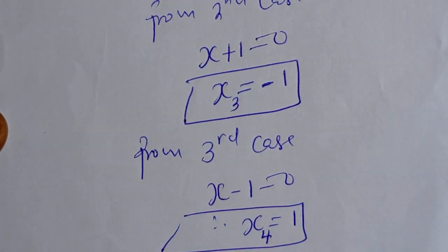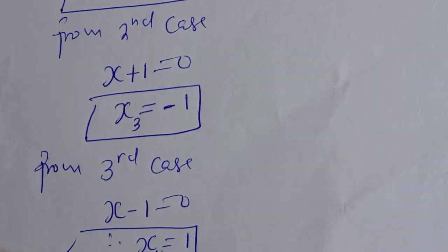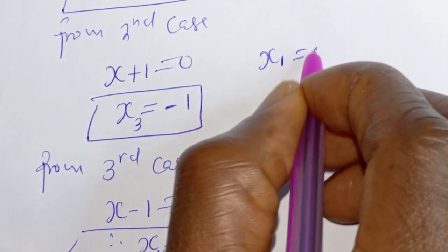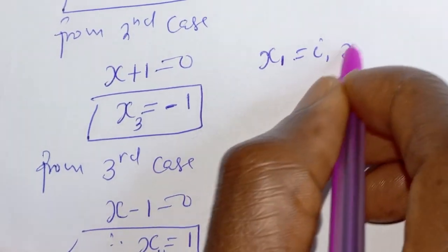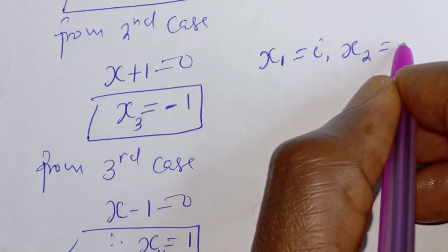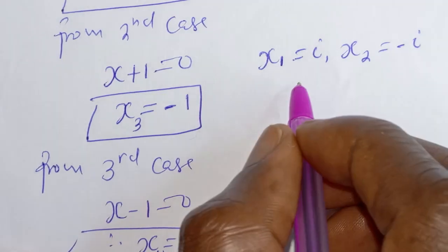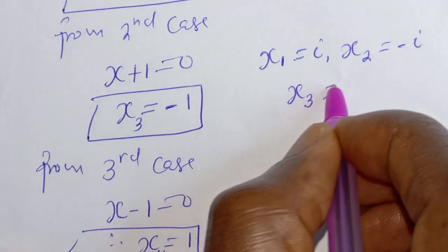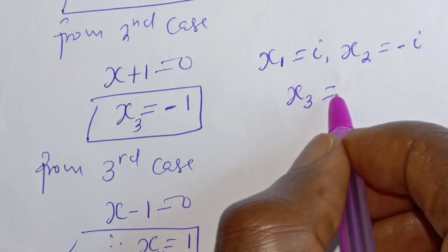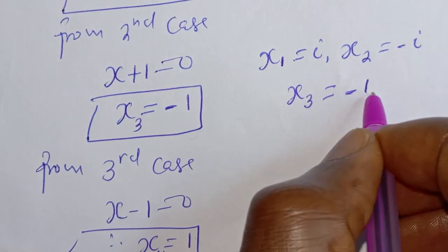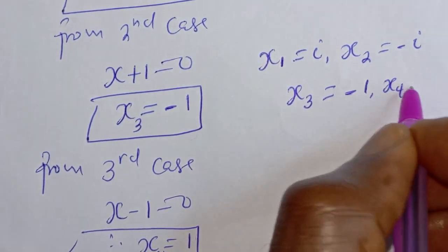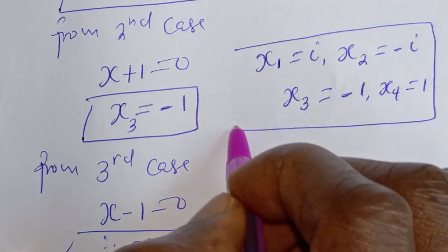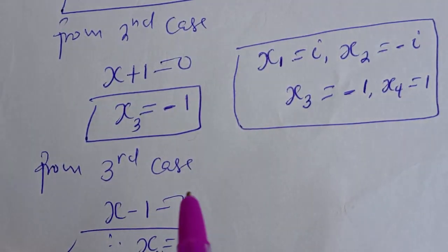Therefore, our final answers are: S1 is equal to i, S2 is equal to minus i, S3 is equal to minus 1, and S4 is equal to 1. Thank you for watching. Don't forget to like, share, comment, and subscribe.